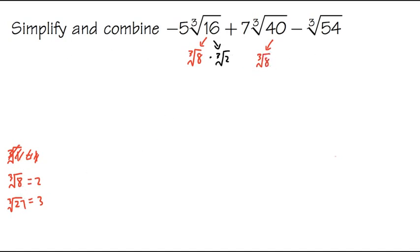And then we multiply by the cube root of 5. Cube root of 8 times cube root of 5, 8 times 5 is equal to 40 inside. That's good.